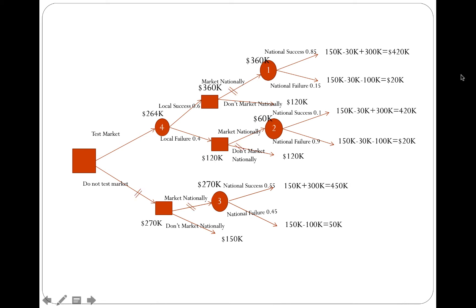If we had gone backward in this decision tree using expected value, we would end up with the decision to not test the market and go ahead and directly market at the national level. This is because we make this decision without regard to the chances of success or failure and are purely looking at expected values. Basically, we are risk-neutral — we don't have a risk-taking or risk-averse type of behavior influencing this decision.